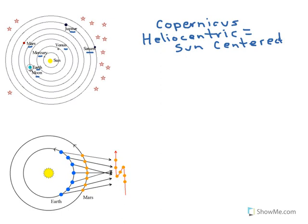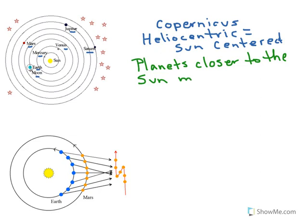One of the key ideas in the heliocentric model is that planets closer to the Sun move faster than planets farther away. So in our system, Mercury is going to be moving the very fastest, followed by Venus, then Earth, then Mars, then Jupiter, and then Saturn.